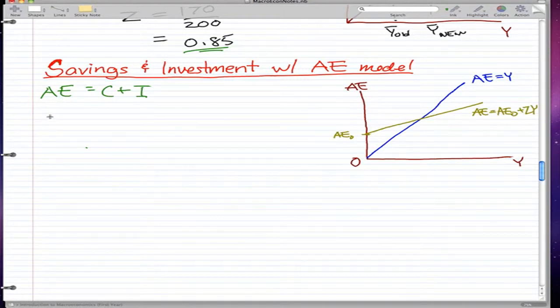So, savings and investment with the AE model is what we're focusing on in this video. And we start off with something familiar again, AE equals C plus I.